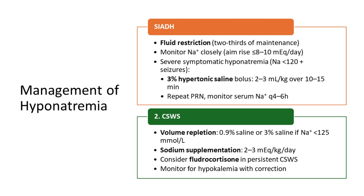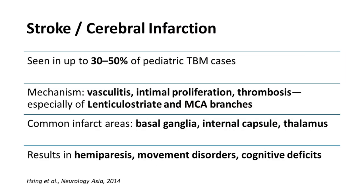Cerebral infarcts are another complication, due to vasculitis and thrombosis of the lenticulostriate arteries and MCA branches. Infarct areas typically involve the basal ganglia — causing tremors and extrapyramidal involvement — as well as the internal capsule, leading to stroke, and the thalamus. As a preventive measure, give aspirin to prevent this complication.